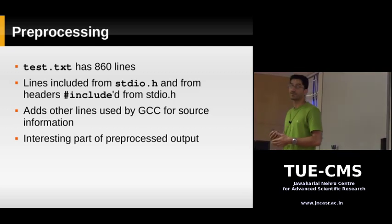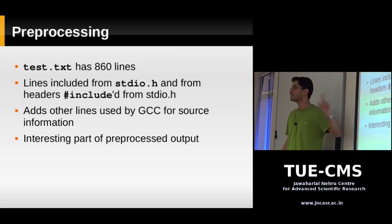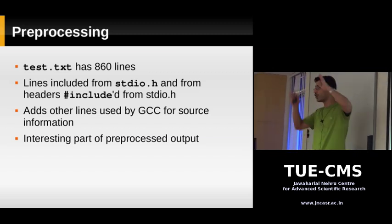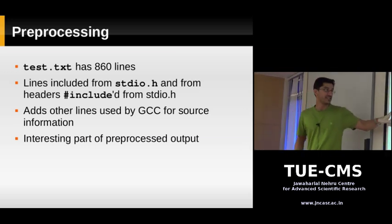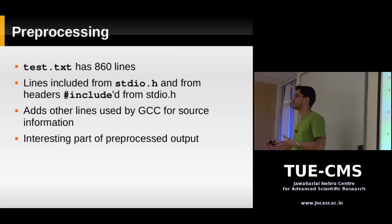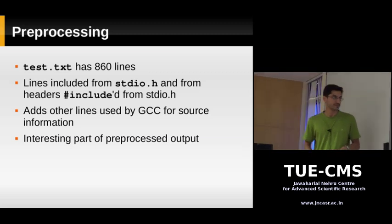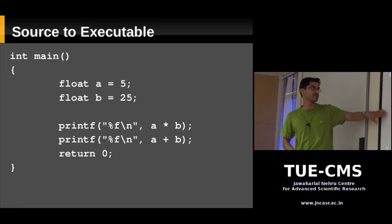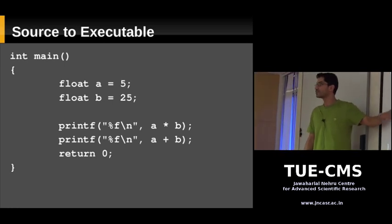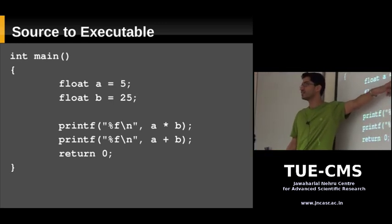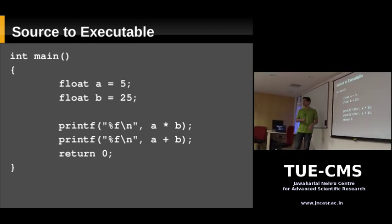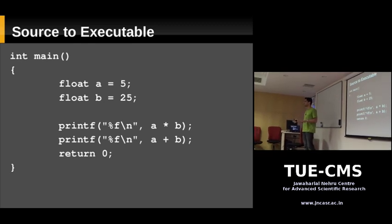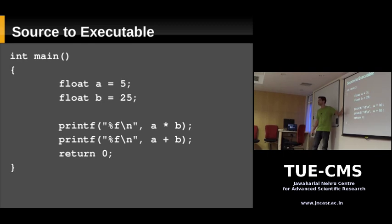The preprocessor also adds a lot of housekeeping lines — certain lines which only the gcc compiler can understand. The reason is, suppose you get an error while compiling your program; the gcc compiler needs to know which line that error came from. If you just had all your lines in one file, it can't tell whether a line came from stdio.h or from your own program. So the preprocessor adds special lines which tell the gcc compiler where each line came from. In the preprocessed output, notice that AVALUE has been replaced with the number five, and the comment has been removed.